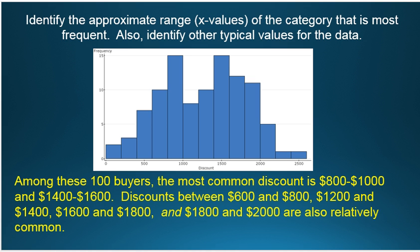Among these 100 buyers, the most common discount, and there are actually two of those, the common discounts are from 800 to 1,000, and from 1,400 to 1,600. And each of those bins has a total, each of those categories has a total of 15 observations.